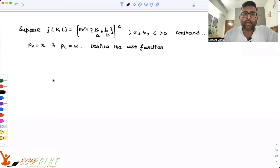You are given a production function y(k,l) equals min of k by a, l by b to the power c, where a, b, c are constants. The price per unit of capital is r, price per unit of labor is w. Derive the cost function.